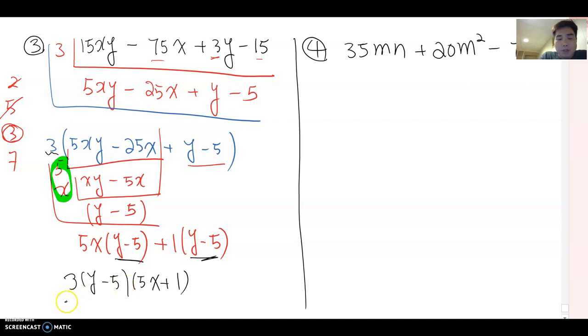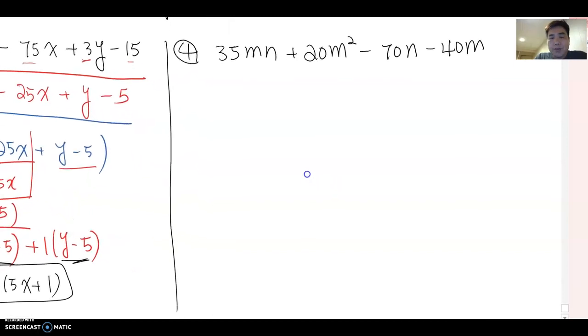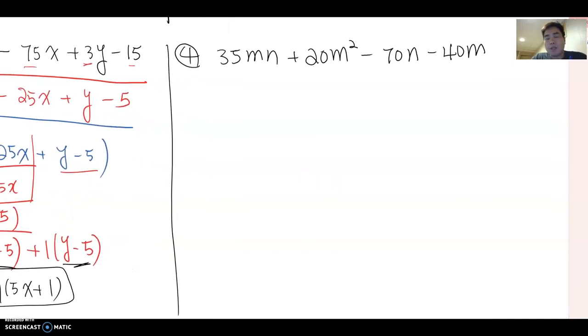Okay, then look at number four. So 35mn plus 20m² minus 70n minus 40m. Do you see any common factor? Do you see any common factor in all four terms?